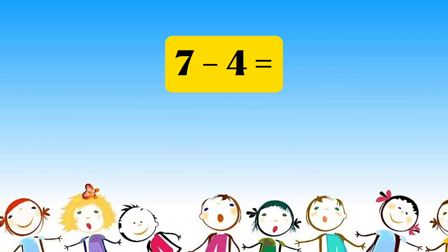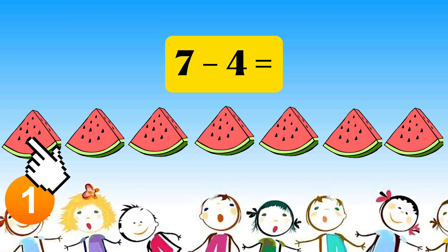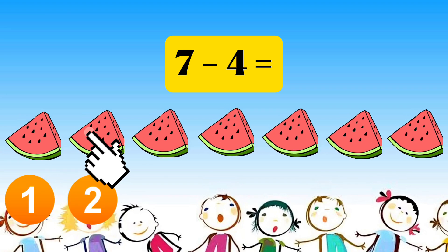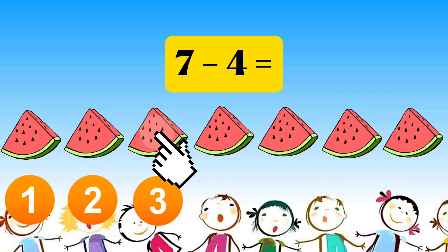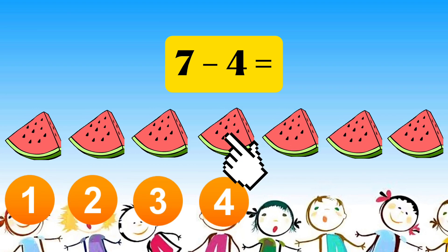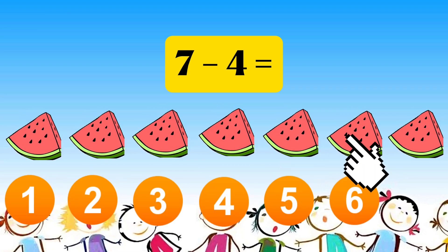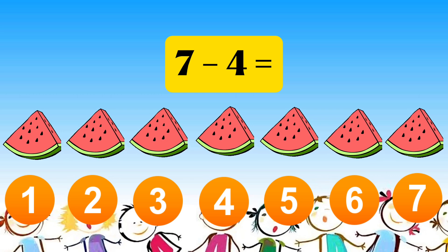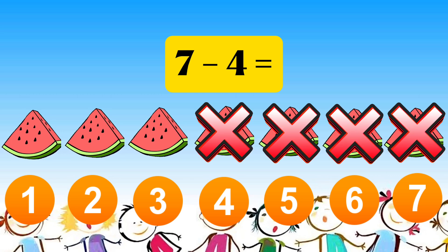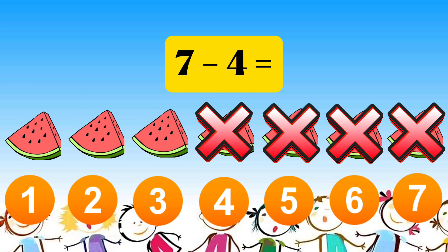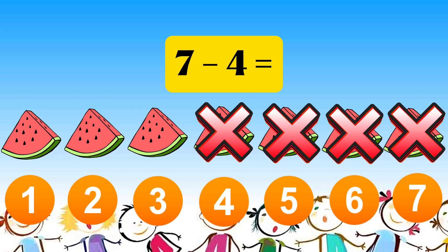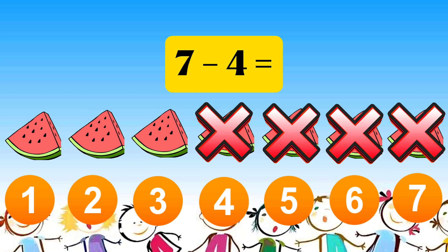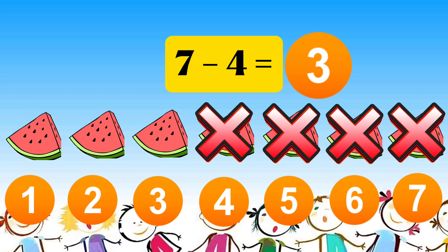Seven minus four equals one, two, three, four, five, six, seven. Less four equals three.